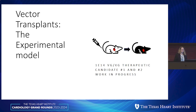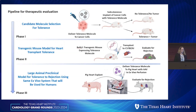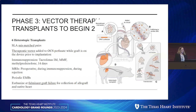We have ongoing work with some targets using different viral vectors — these are proprietary and embargoed right now. As soon as we determine the molecule we want to utilize, we want to go into our pig rejection model, with studies hopefully beginning in fall 2024.